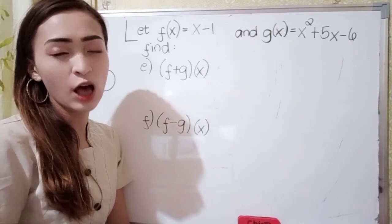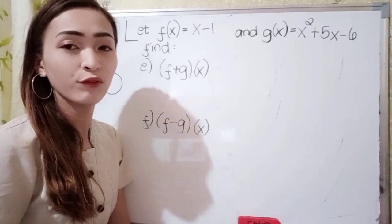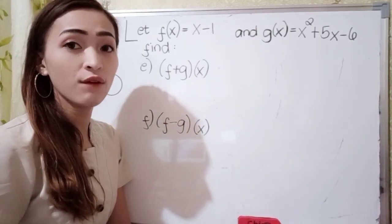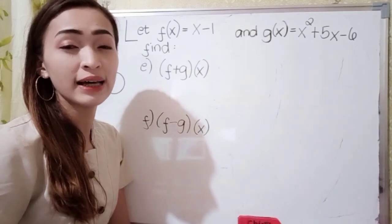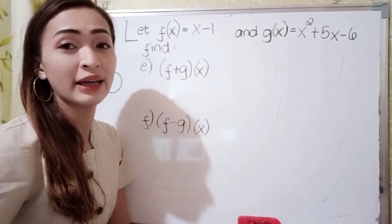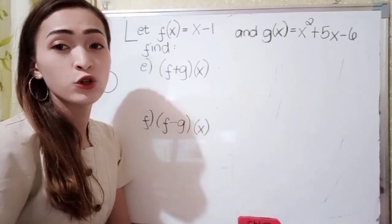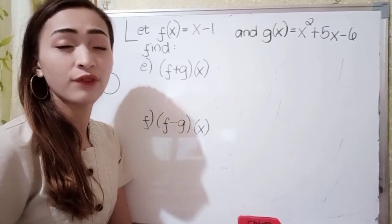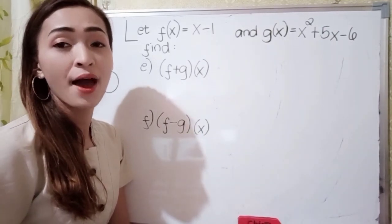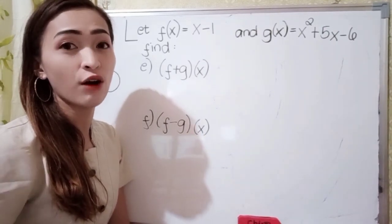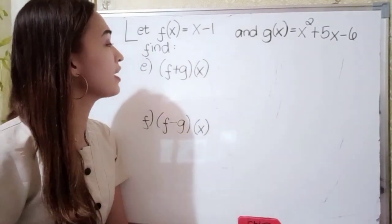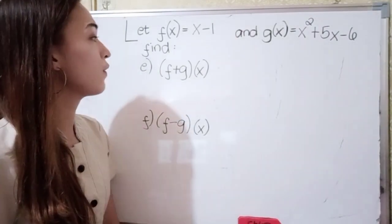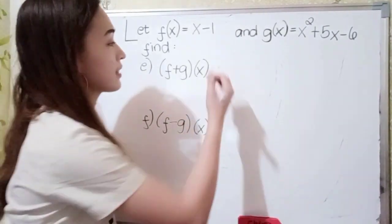For our next example, let f of x equals x plus 1 and g of x equals x squared plus 5x minus 6. Find letter e, f plus g of x, and letter f, f minus g of x. So first, let's solve for letter e, f plus g of x.